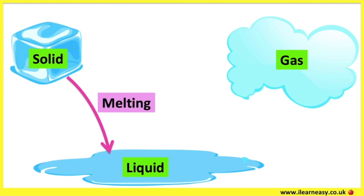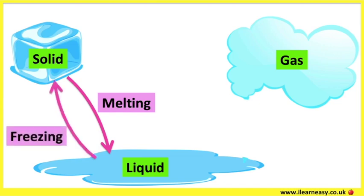For example, ice turns into water when it's left at room temperature. When a liquid changes into a solid, it's called freezing. For example, water changes into ice when it's cold enough to freeze.